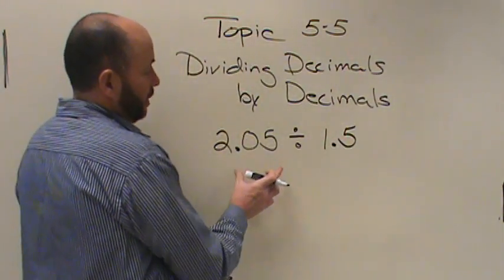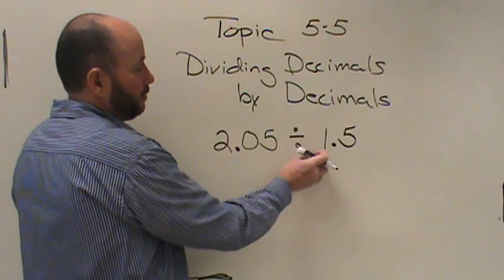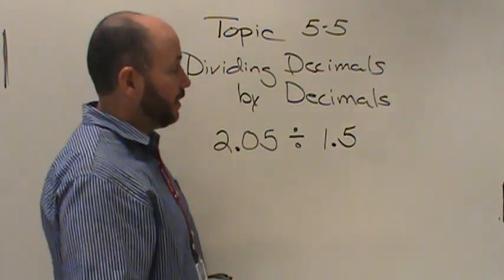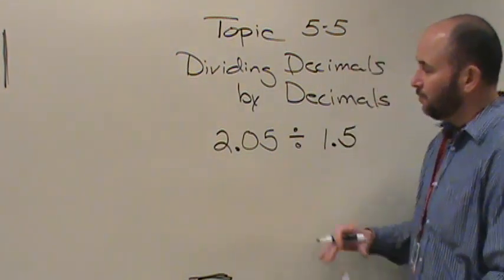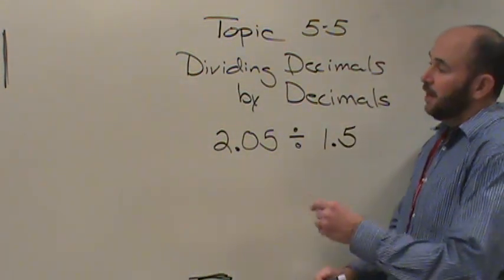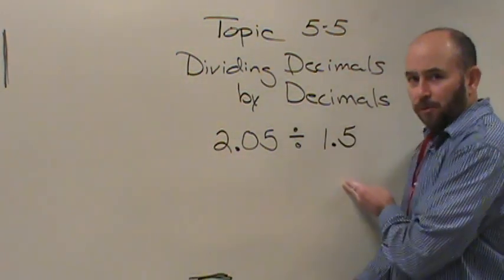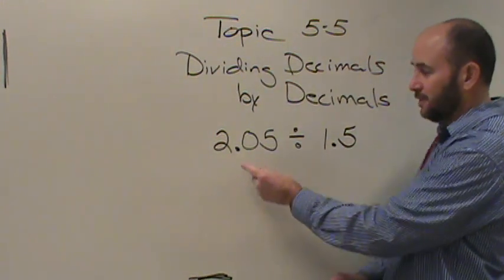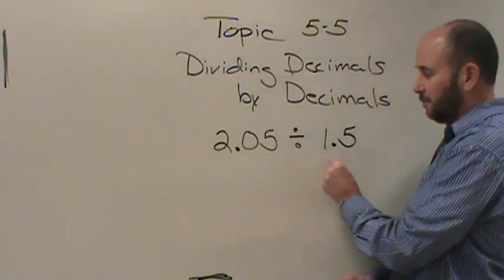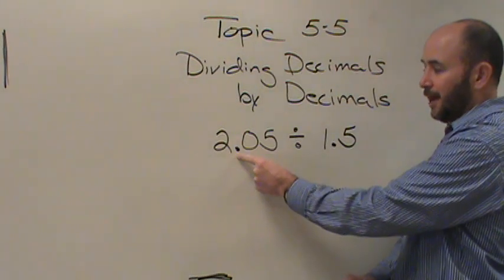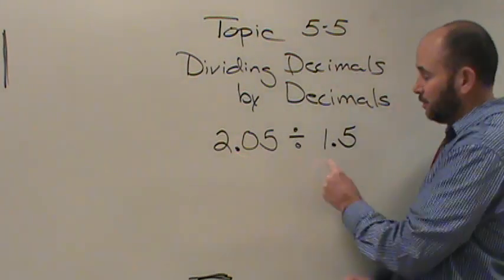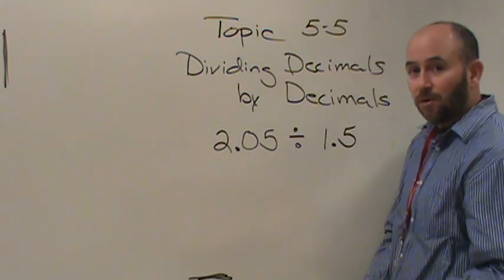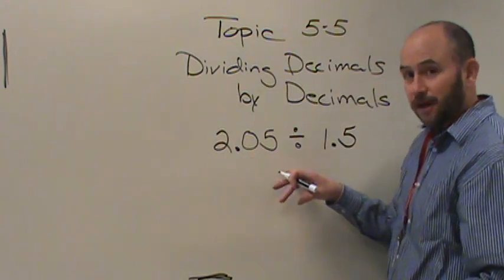So we'll be talking about a decimal being divided by a decimal. In a situation like that, the first thing you want to do is look at your problem and ask yourself, what do I have? Well, in this situation, you have a decimal divided by a decimal, which means you're going to have to deal with two decimal points. So that's our goal today — to show you how you do that.